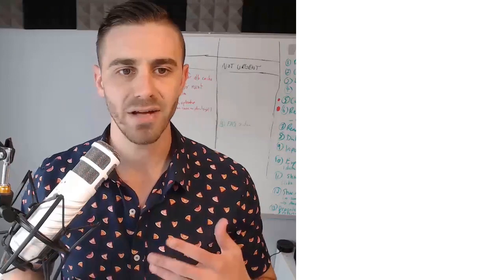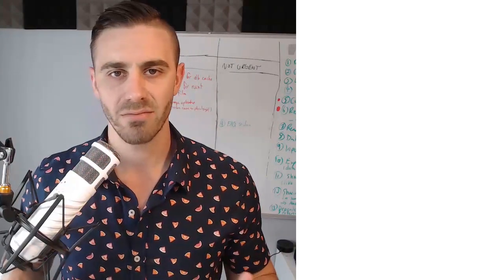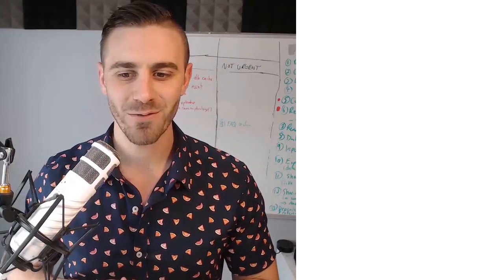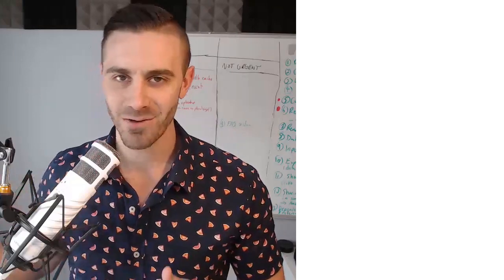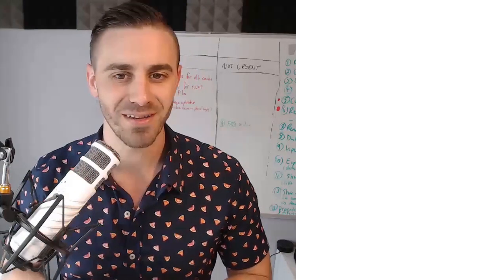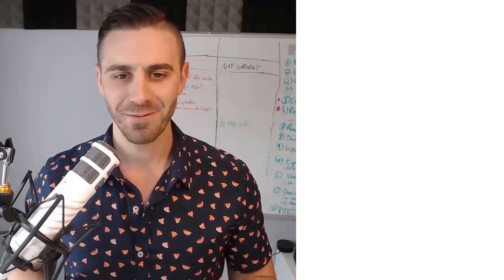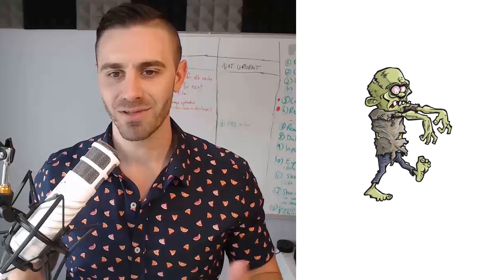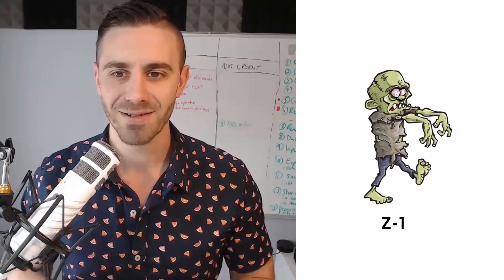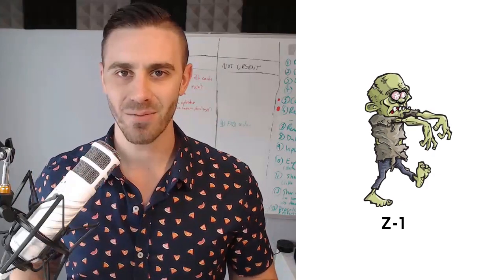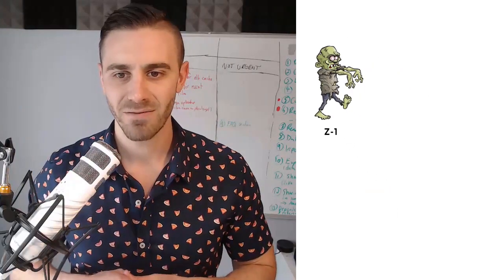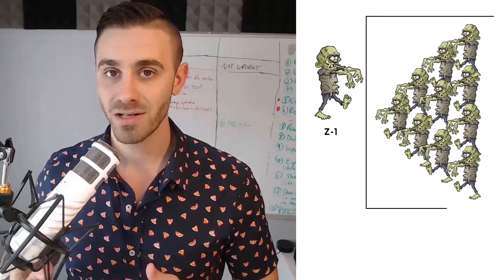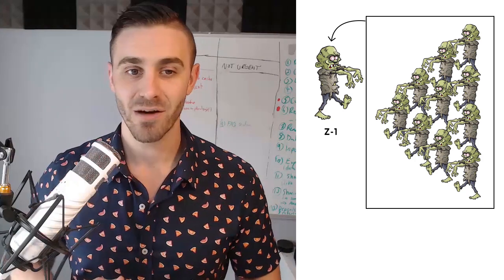Now, how do we use custom scopes in our Android projects? I'm going to approach this with a very abstract example first, and then give you a more practical example. Suppose there's a zombie — zombie number one — and zombie number one has the ability to create other zombies. If they create 10 zombies, those zombies are scoped to zombie number one. If zombie number one dies, all of the zombies that it created will also die.